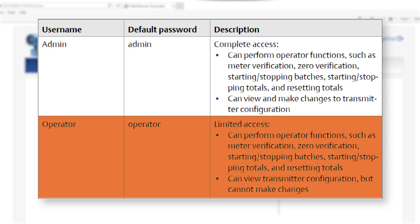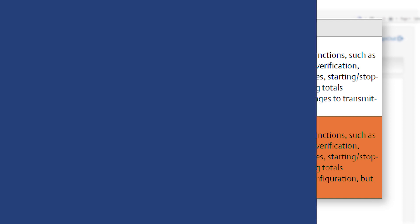Operator has limited access and can perform operator functions such as meter verification, zero verification, starting and stopping batches, starting and stopping totals, and resetting totals. However, the operator can only view transmitter configuration but cannot make changes.